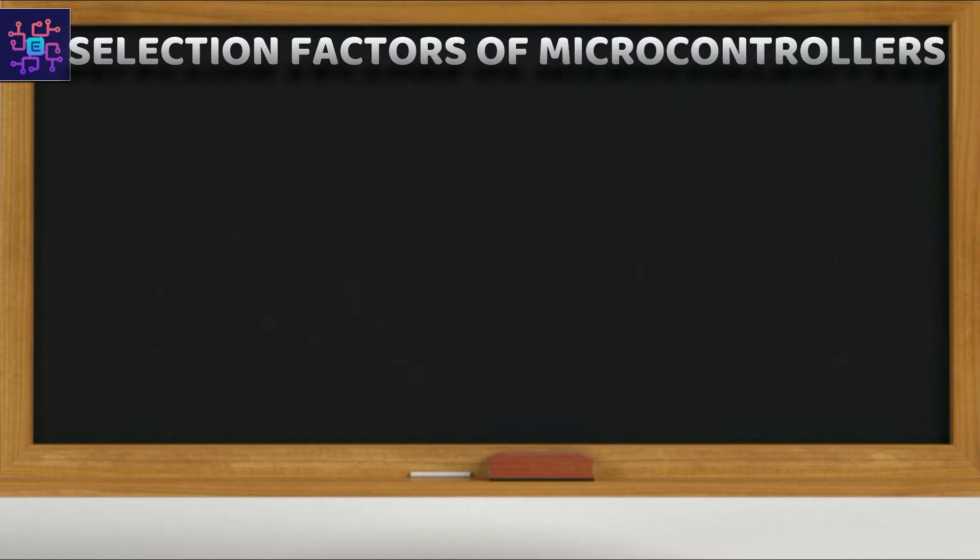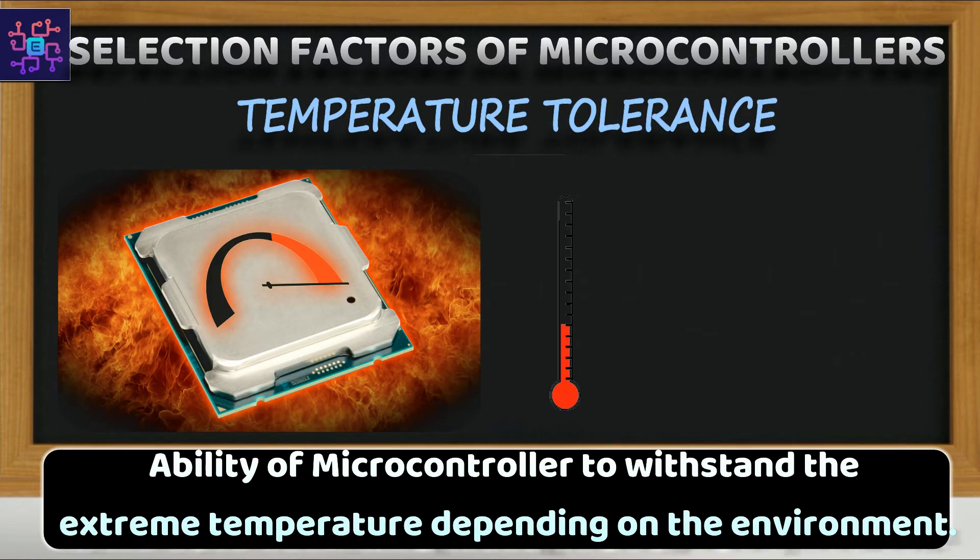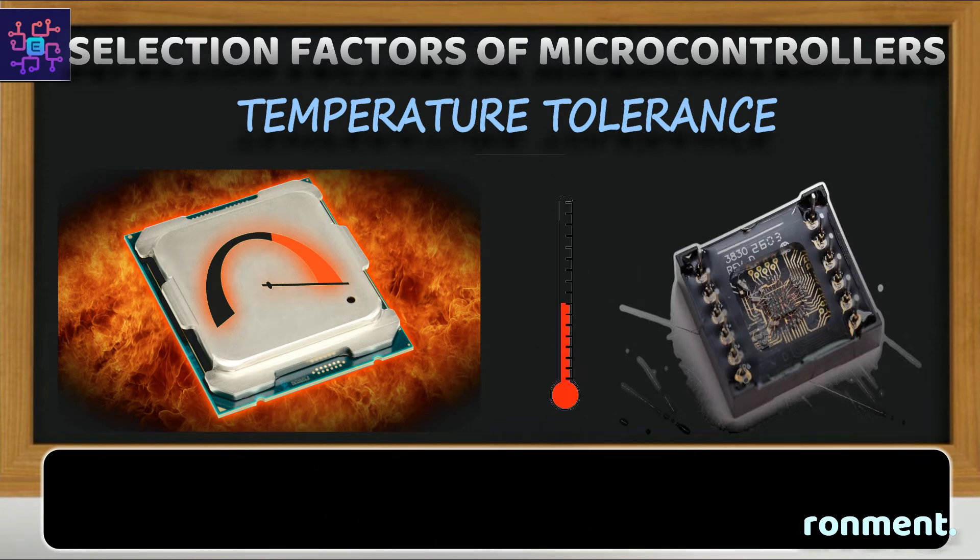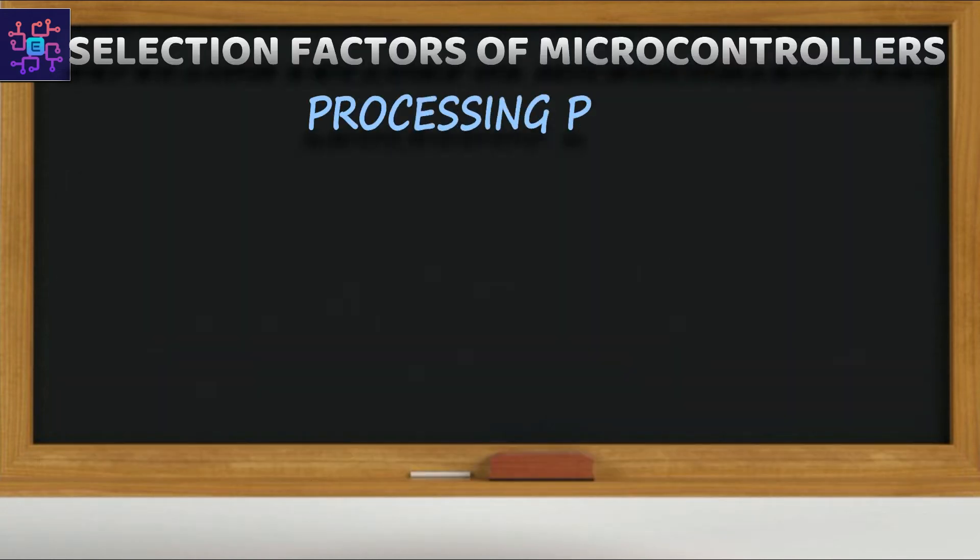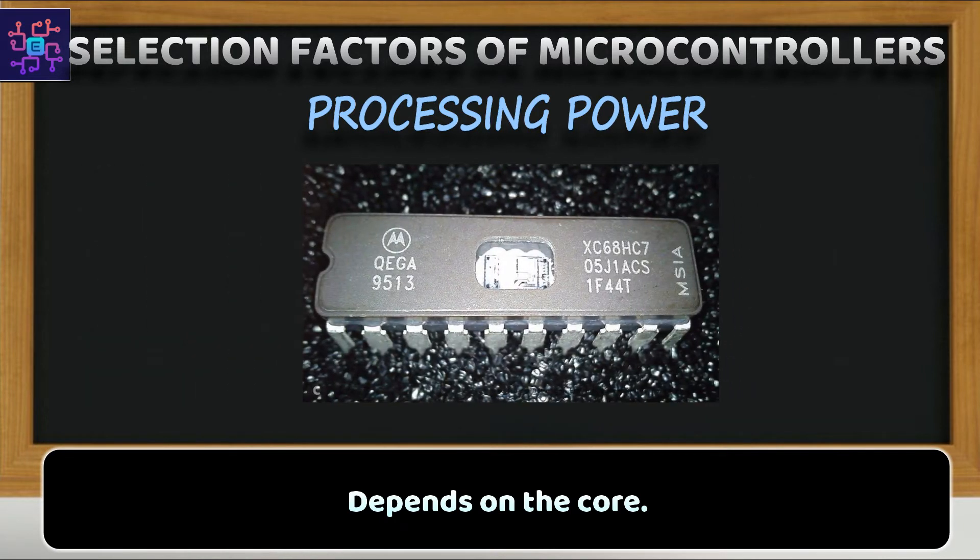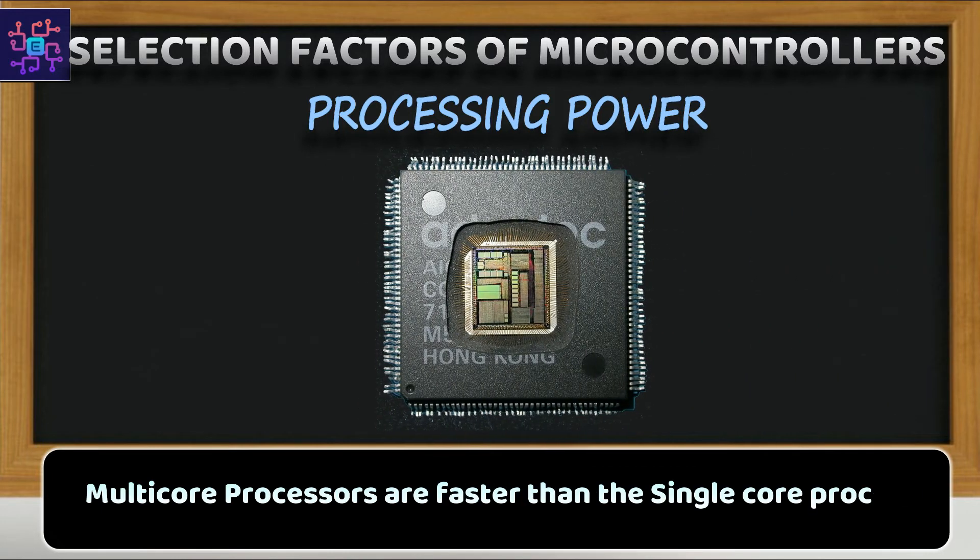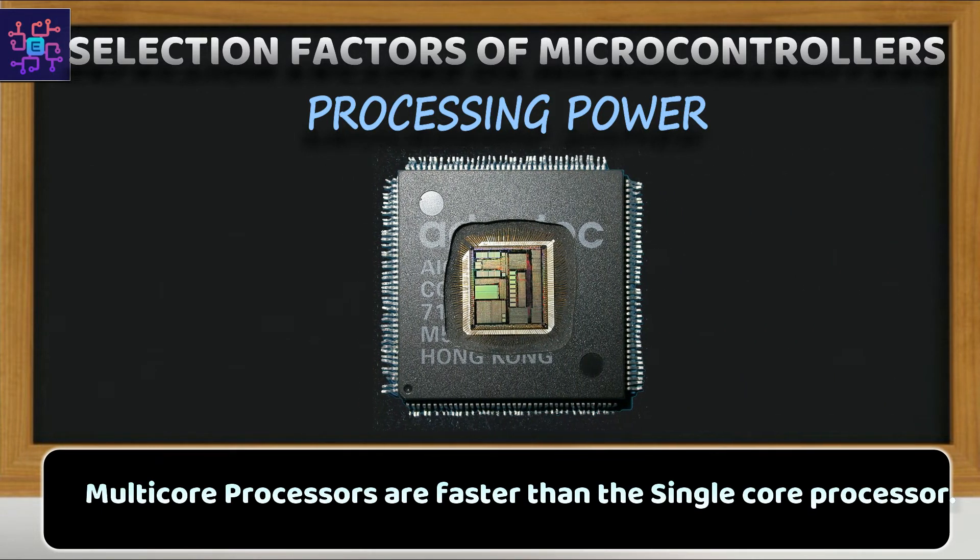First is the temperature tolerance. Temperature tolerance is the ability of a microcontroller to withstand the extreme temperature depending on the environment. Second is the processing power. It depends on the core. Will a single core be efficient or a dual core is needed? Multi core processors are more faster than the single core processor.